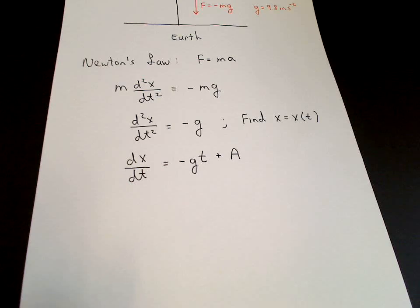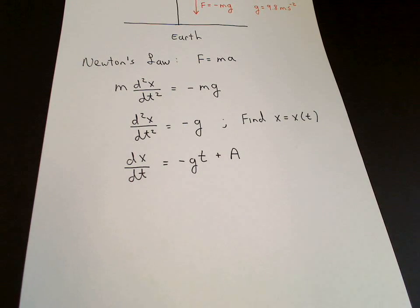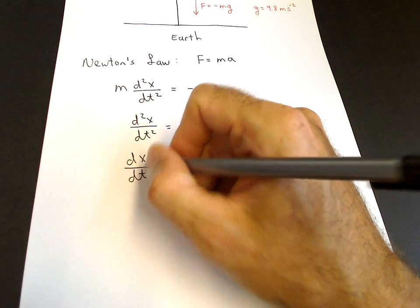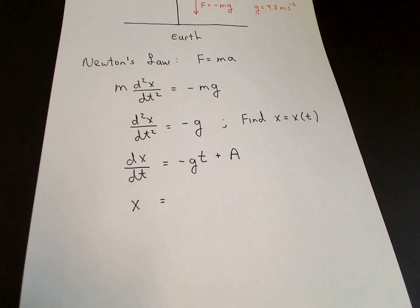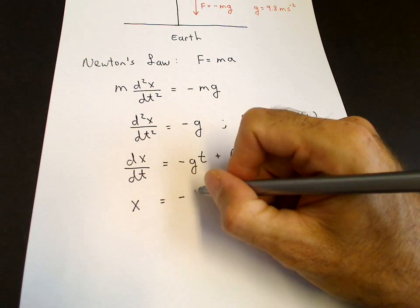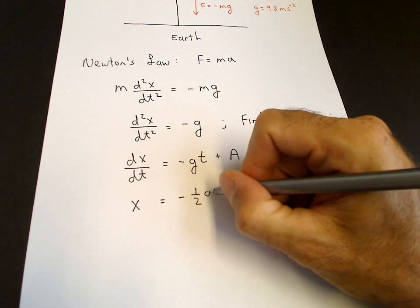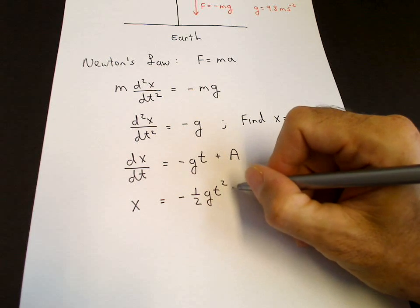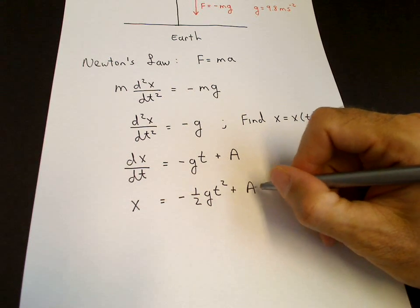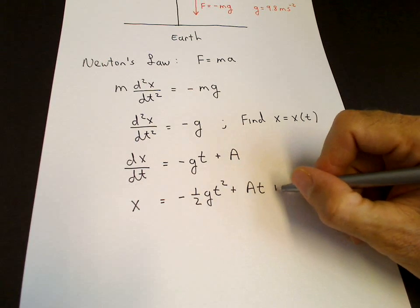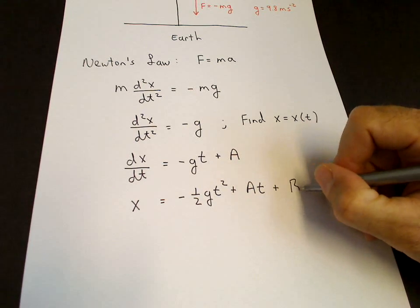And then we go ahead and we integrate the equation one more time. We take the antiderivative of dx dt, we get x plus a constant. And then we take the antiderivative of minus gt, we get minus one half gt squared. We take the antiderivative of a, we get a t, and then we have our extra constant b.